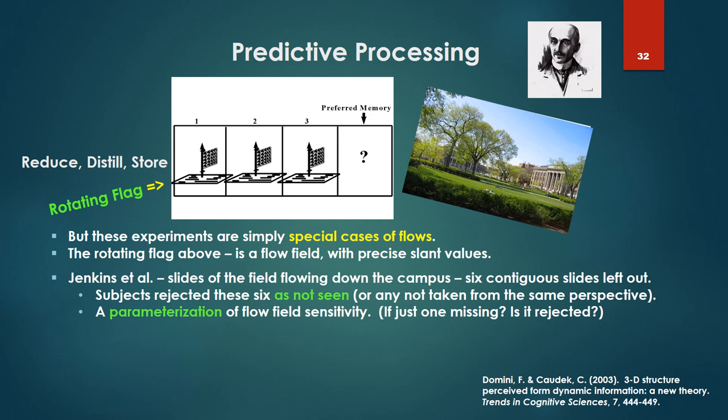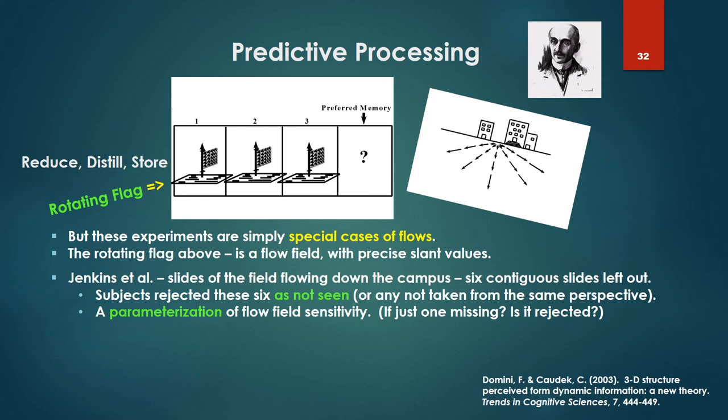Jenkins et al. did a study with slides of a field flowing down the campus, or as I walked down the campus, a flow field. Six contiguous slides were left out. The subjects rejected these six as not seen. So, in other words, they were shown a whole bunch of slides of this campus as you flow down the campus. But there were six contiguous slides not seen. Every time they were shown one of these slides, did you see this slide? They would say no. Or, for that matter, they would reject any slide not taken from the same perspective as this flow. But, in effect, you have here a parameterization going on of flow field sensitivity or a sensitivity to flow fields. For example, one could ask, well, what if just one slide were missing from this flow? Is that still going to be rejected? Is it two slides? How sensitive we are to missing a chunk of the flow? That's the question.